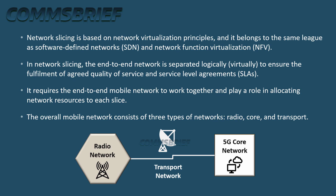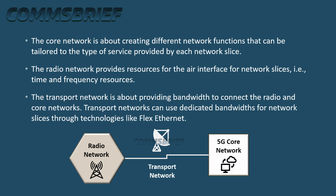It requires the end-to-end mobile network to work together and play a role in allocating network resources to each slice. The overall mobile network consists of three types of networks: radio network, core network, and transport network. The core network creates different network functions tailored to the type of service provided by each network slice. The radio network provides time and frequency resources for the air interface for network slices. The transport network provides bandwidth to connect the radio and core networks.